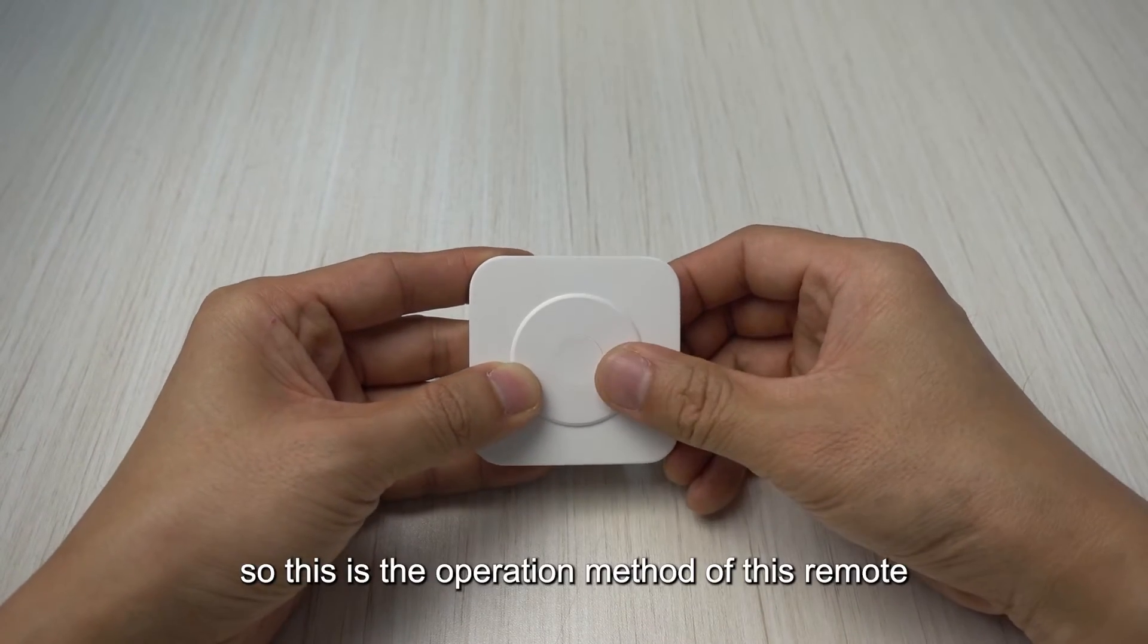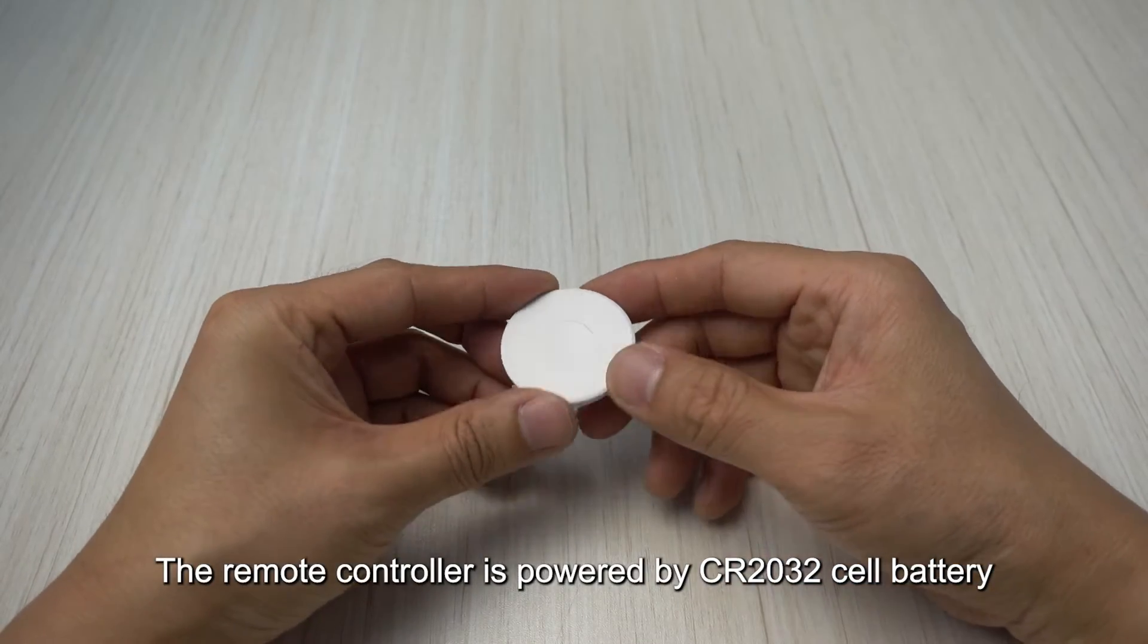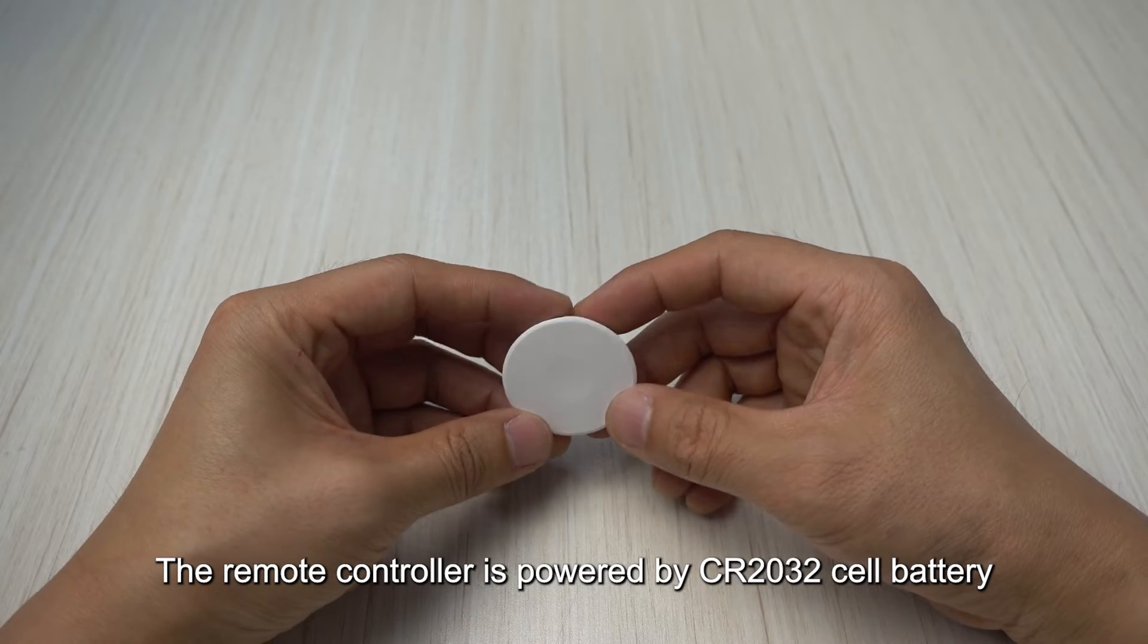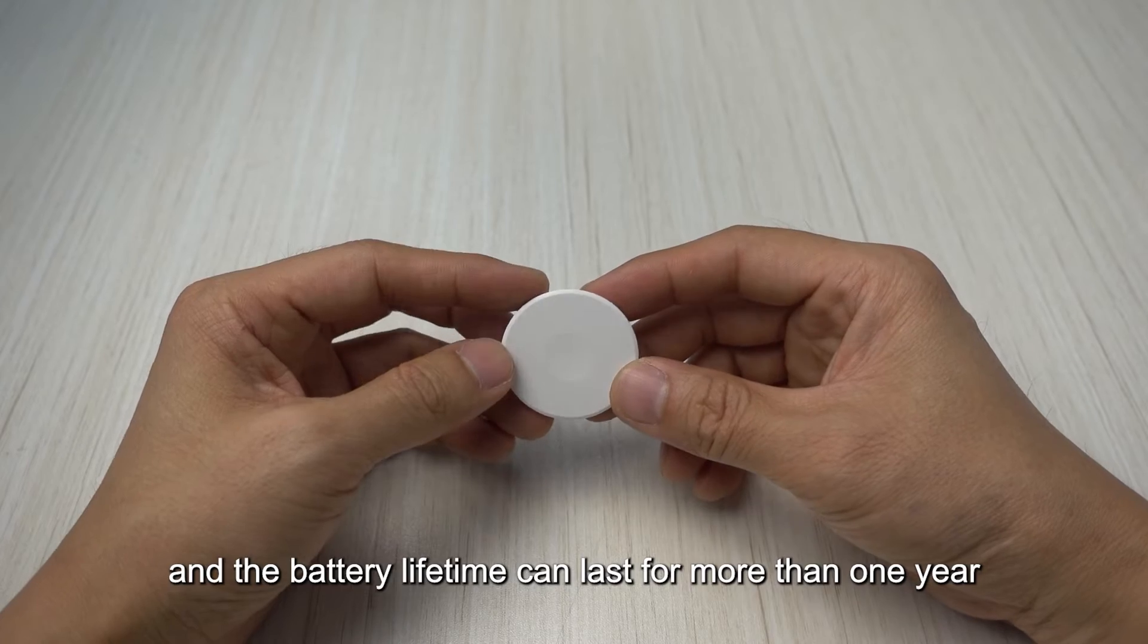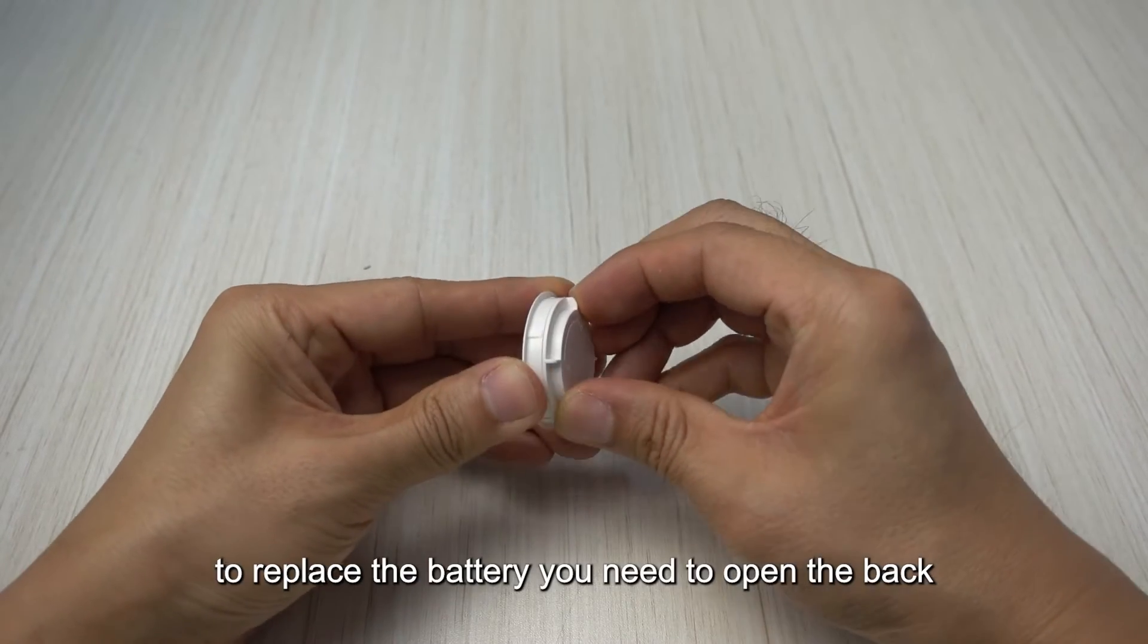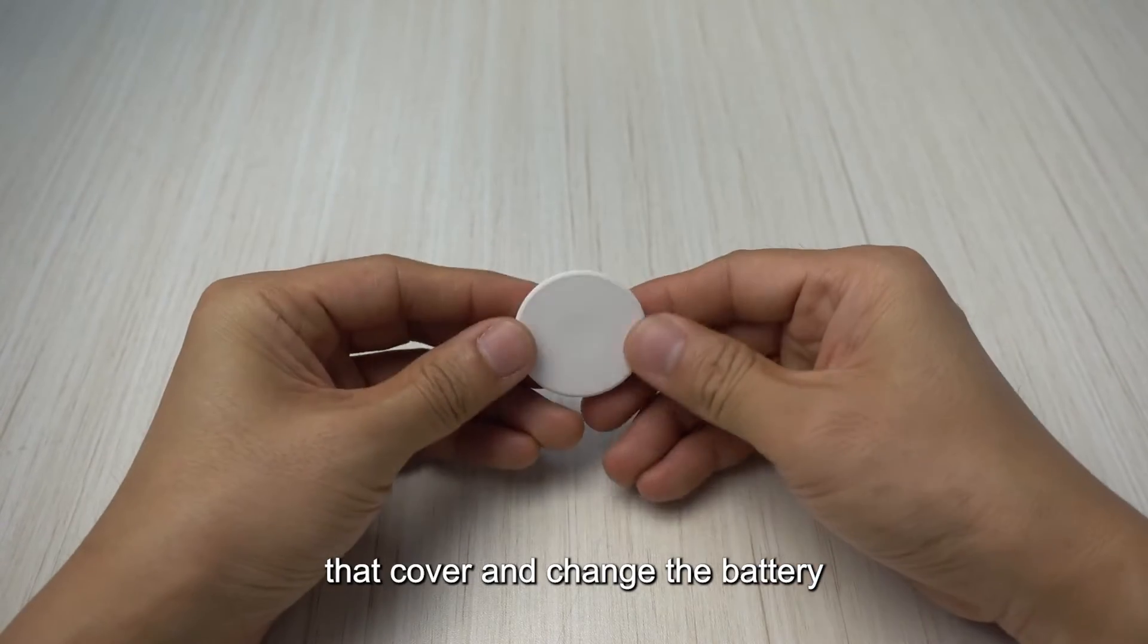So this is the operation method of this remote. The remote controller is powered by a CR 2032 cell battery and the battery lifetime can last for more than one year. To replace the battery you need to open the back cover and change the battery.